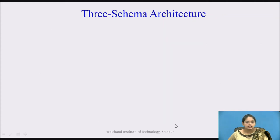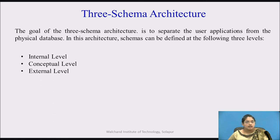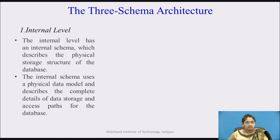Let us start with the three schema architecture. The goal of the three schema architecture is to separate the user applications from the physical database. In this architecture, schemas can be defined at three levels: internal level, conceptual level, and external level. The internal level has an internal schema which describes the physical storage of the database. The internal schema uses the physical data model and describes the complete details of data storage and access paths for the database.